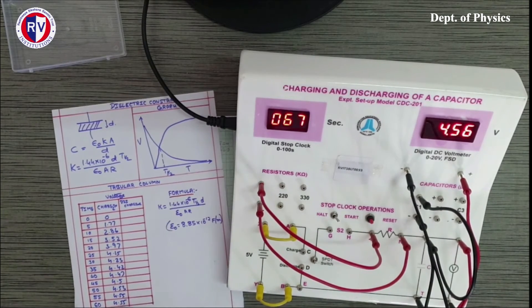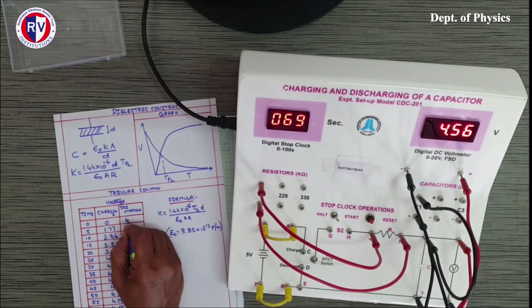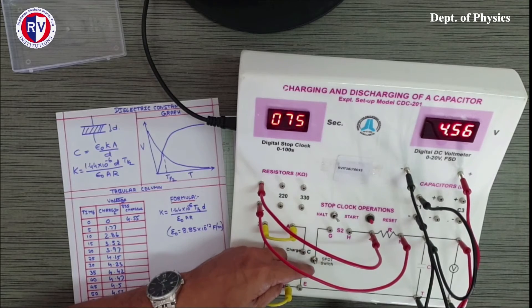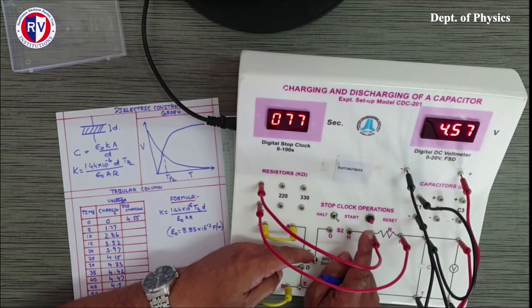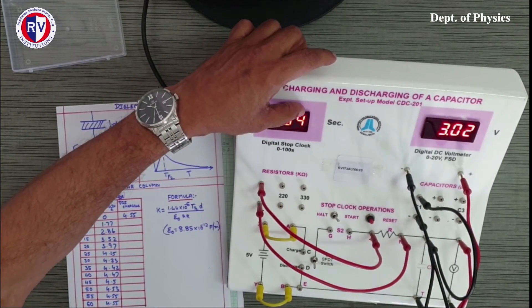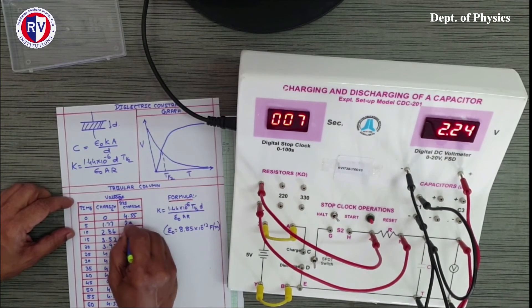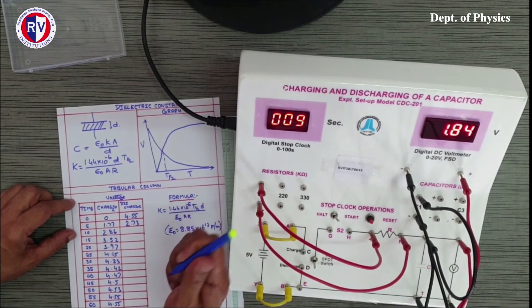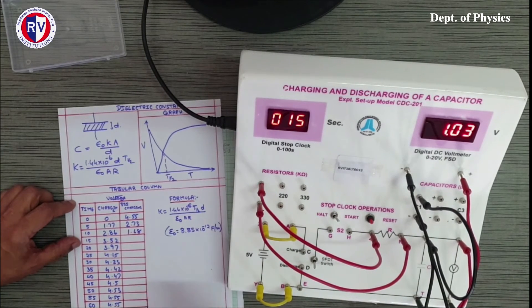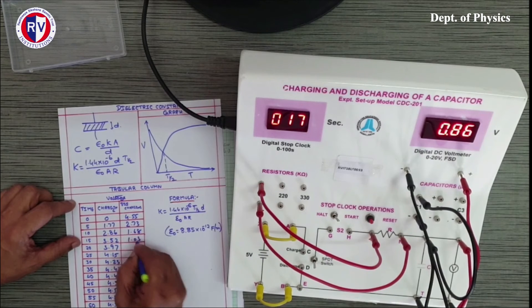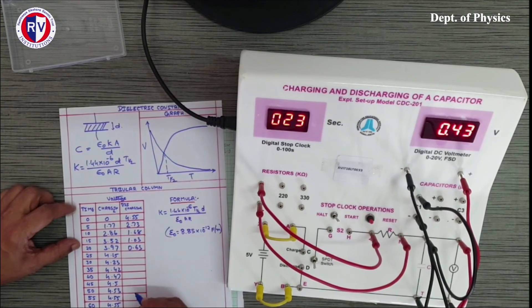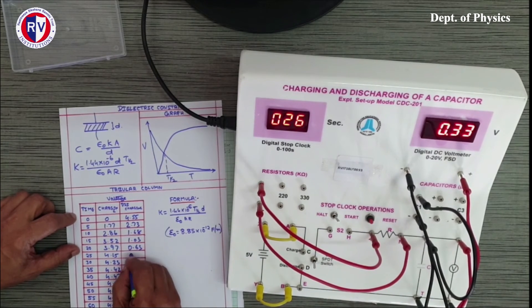Now we can go for discharging. For discharging starting voltage I will write the same 4.5 maximum, then the knob should be put in the discharge mode, simultaneously the clock should be reset like this. Again you can see the voltage is reducing. For 5 seconds, now it is 2.73, it is coming down. For 10 seconds 1.68, 15 seconds is 1.03, 20 seconds 0.63, 25 seconds 0.4, 30 is 0.24.